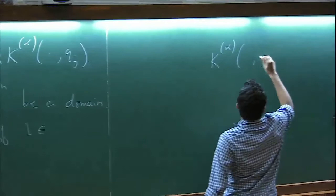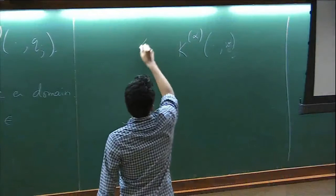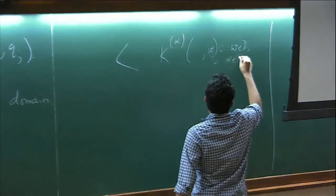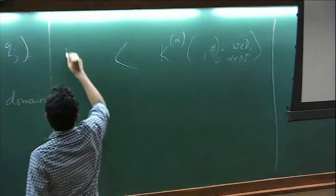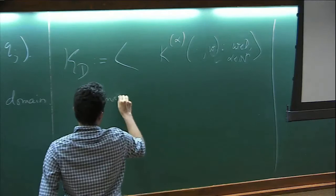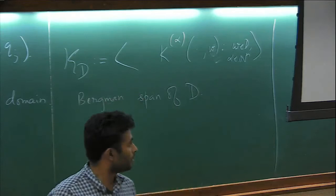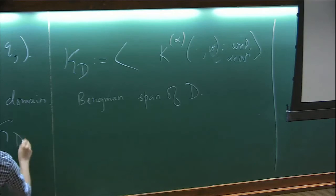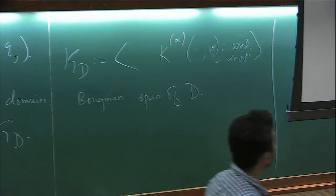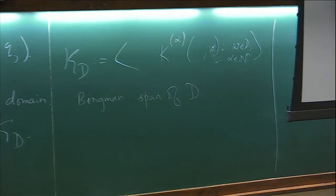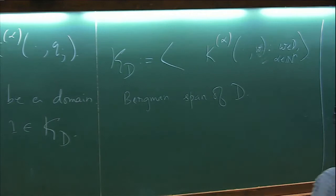So what we'll do is we'll take all these objects which are of this form. And then let's look at the complex linear span where w varies over the domain and alpha over nn, complex linear span of this and we'll call it the Bergman span. So the lemma will state that this is the case if and only if one belongs to the Bergman span of t.